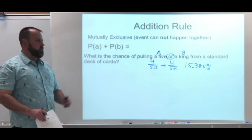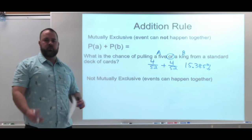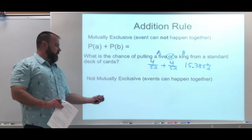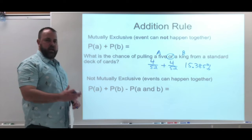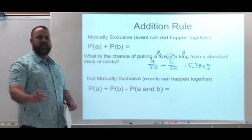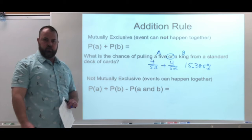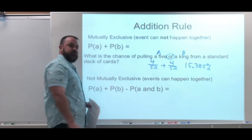When events are not mutually exclusive, it means the events can happen together. We still add the two probabilities together, but we have to worry about overlap. Because if the events can happen together, their count falls in both the probability of event A and event B, so we risk over-counting. Subtracting how many times they can happen at the same time removes that over-counting.